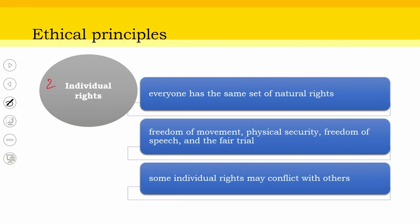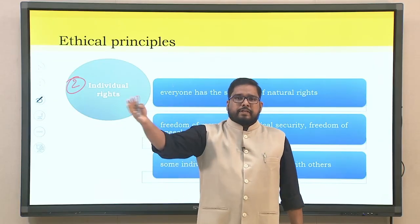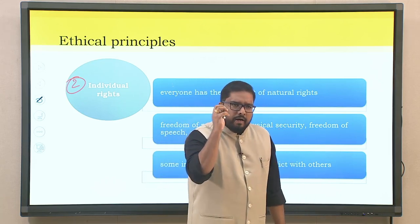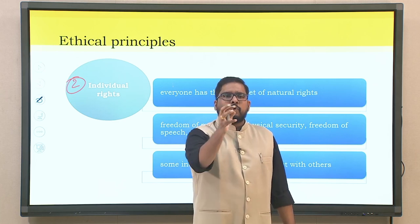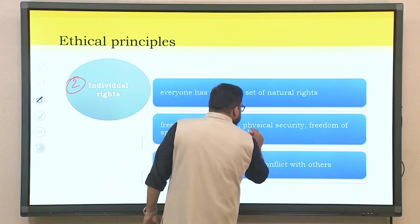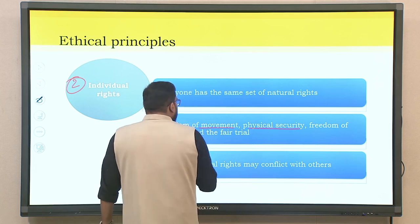The second ethical principle is individual rights. There cannot be an ethical consideration or decision without looking into individual rights. Everyone has the same set of natural rights. Talking in the Indian context, we have the fundamental rights enshrined in the constitution from Article 14 to Article 32 — right to equality, right to life, freedom of expression, right to religion, and so on. These are the basic rights in an organization which are the prerogative of every single individual. So it is the freedom of movement, physical security, freedom of speech, and the right to a fair trial.